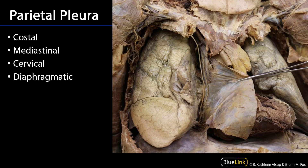Now let's take a look at some of these regions in a more enhanced way. Along this surface would be the costal pleura — we can see that's costal. The surface of the lung would be visceral pleura. Here we can see the pericardium reflected away, and so lining this superficial portion would be the mediastinal pleura.